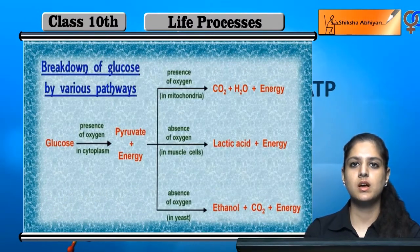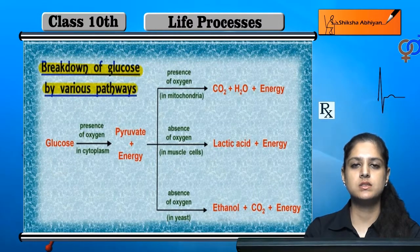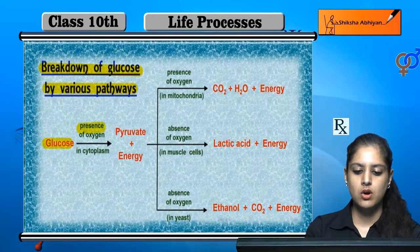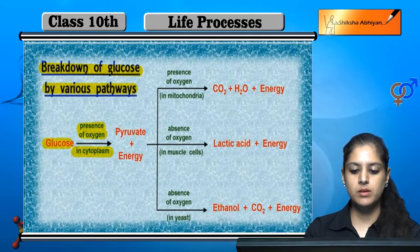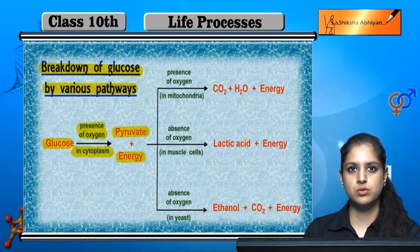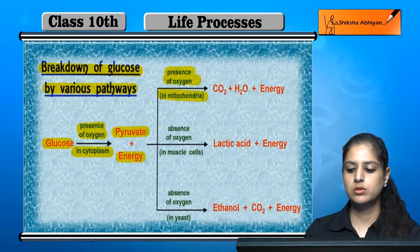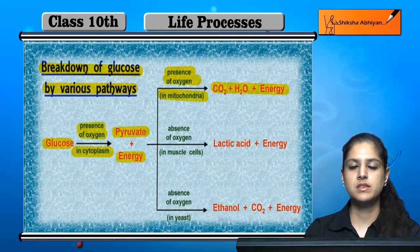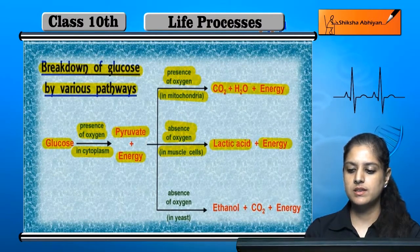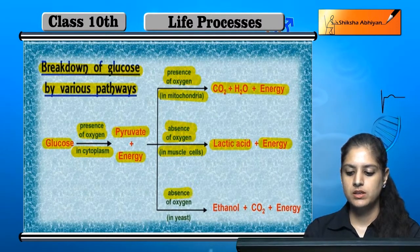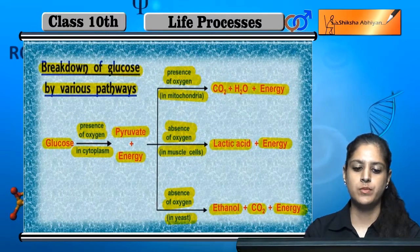In summary, glucose breaks down through different pathways. First, glucose breaks down into pyruvate plus energy. Then pyruvate can go three ways: in the presence of oxygen in mitochondria, it produces carbon dioxide, water, and energy — aerobic respiration. In the absence of oxygen in muscle cells, it produces lactic acid and energy. Or in yeast, in the absence of oxygen, it produces ethanol, carbon dioxide, and energy — fermentation.